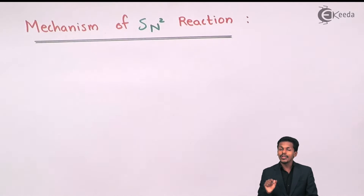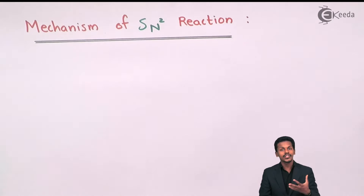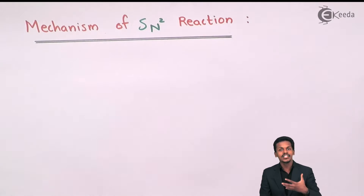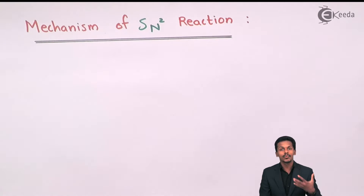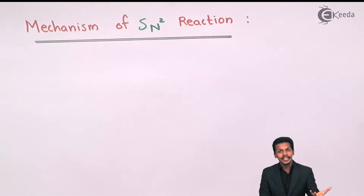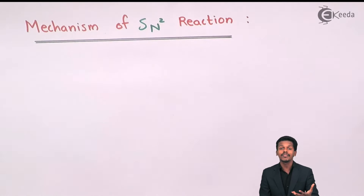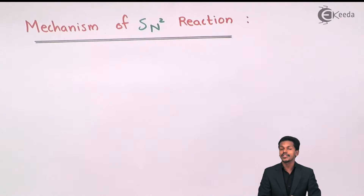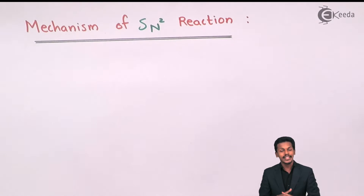But when we talk about SN2, this kind of reaction will have a rate that is dependent on both reactants. For example, methyl bromide along with the base OH⁻. That is the reason this kind of reaction is known as the SN2 mechanism or SN2 reaction.